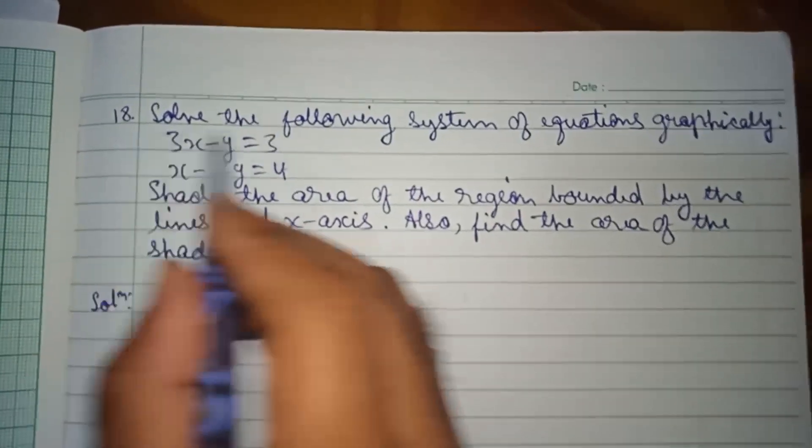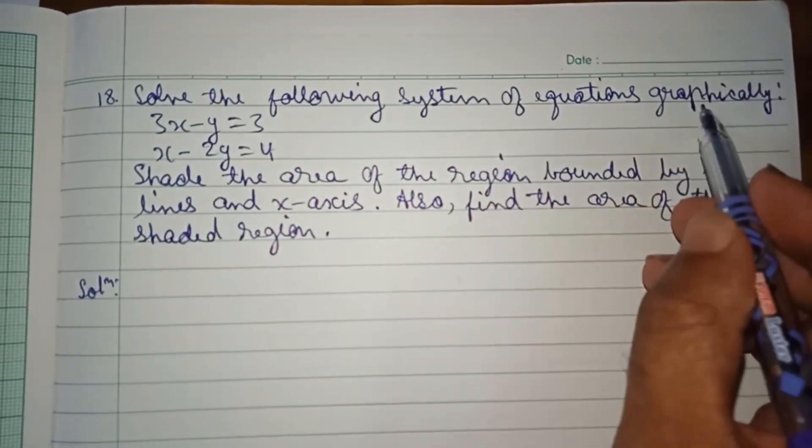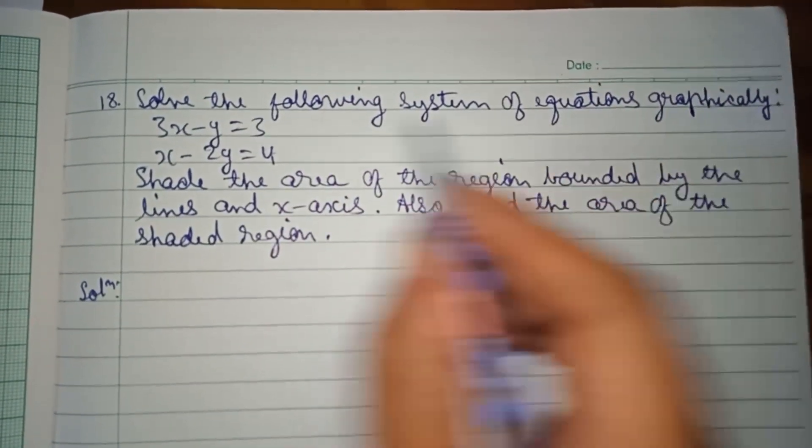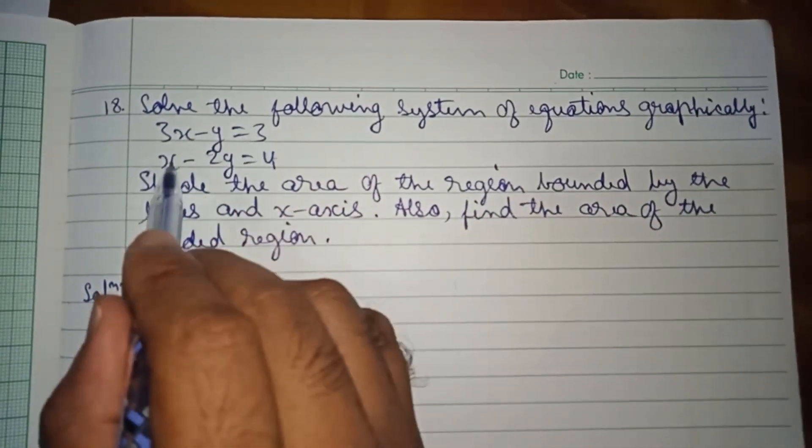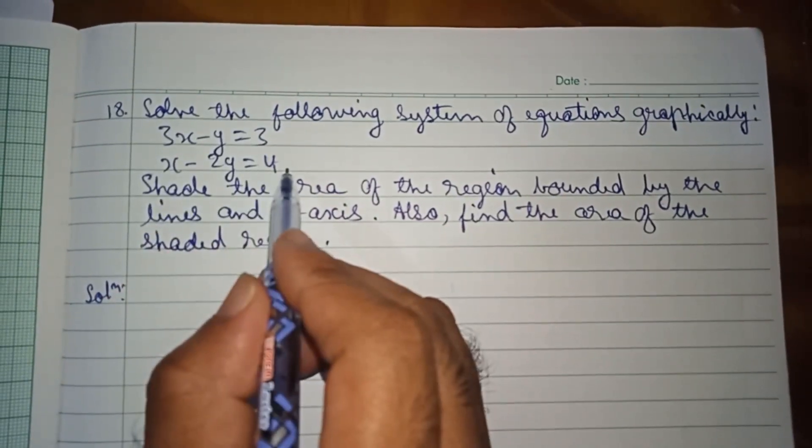Number 18. Solve the following system of equations graphically: 3x minus y equal to 3, and x minus 2y equal to 4.